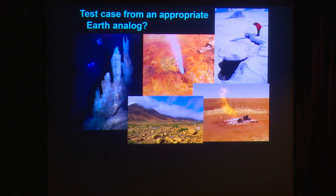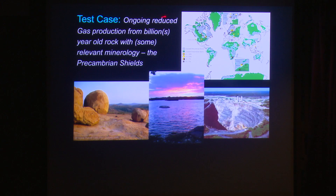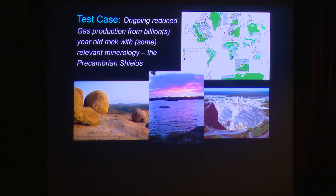The test case I've chosen is ongoing reduced gas production from a part of Earth that I think is relevant to the Mars question: hydrogen and methane production from billion-year-old rock, some of which has mineralogy relevant to Mars. Last year we produced a database of reduced gas concentrations in the Precambrian Shield on a global basis, containing about 250 different gas seeps, gas boreholes, and fracture waters throughout the world from our work and others — predominantly South Africa, the Canadian Shield, and Fennoscandia, but also other parts of the Precambrian globally.